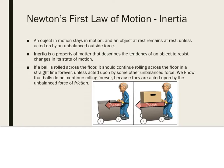If a box is at rest on the floor, it will remain motionless forever unless acted upon by some unbalanced force. If someone came along and pushed the box, the box would move because the person provided an unbalanced force. Inertia is dependent on the mass of an object — the more mass an object has, the greater its inertia, and the more force is required to change its motion.